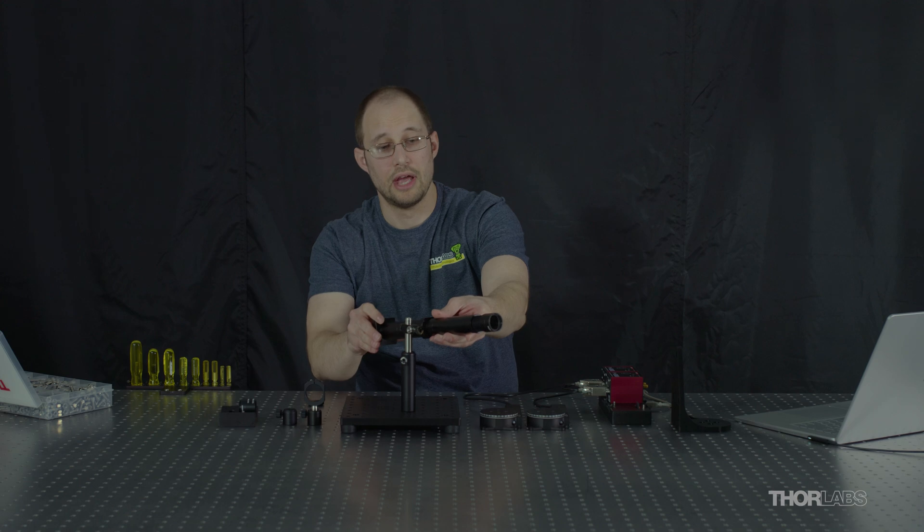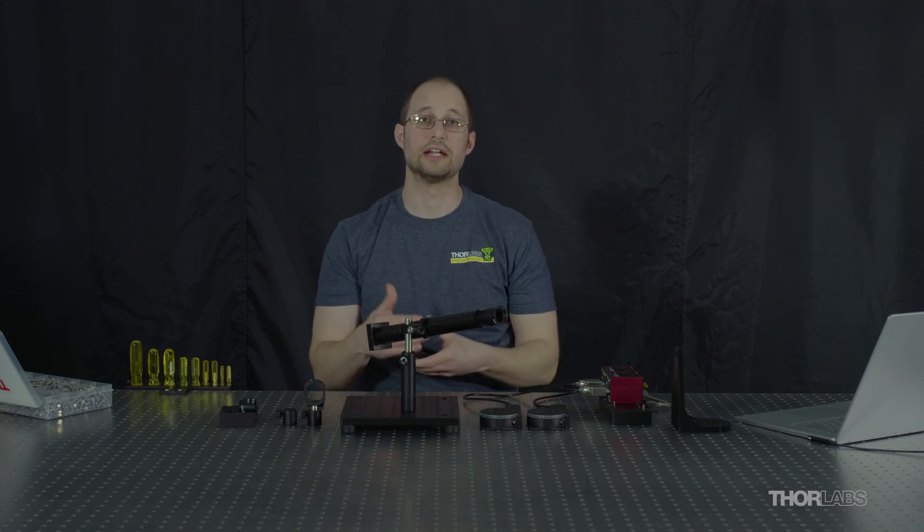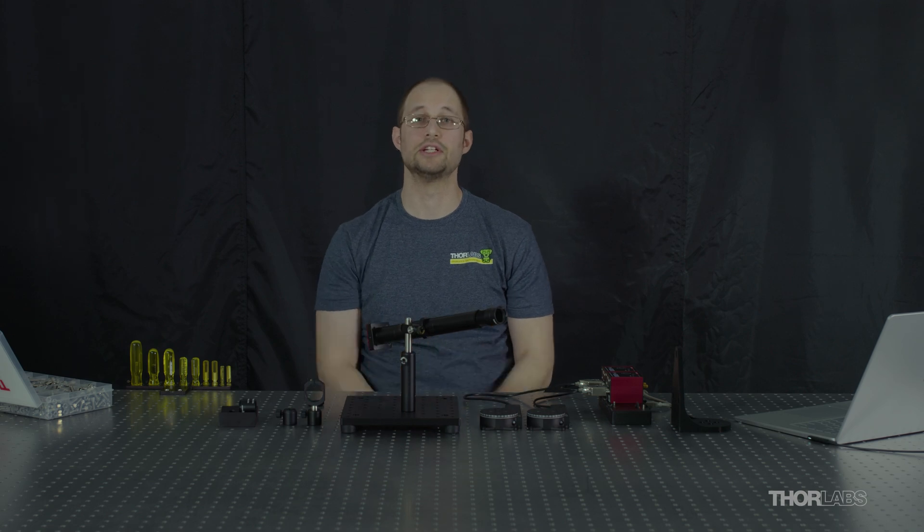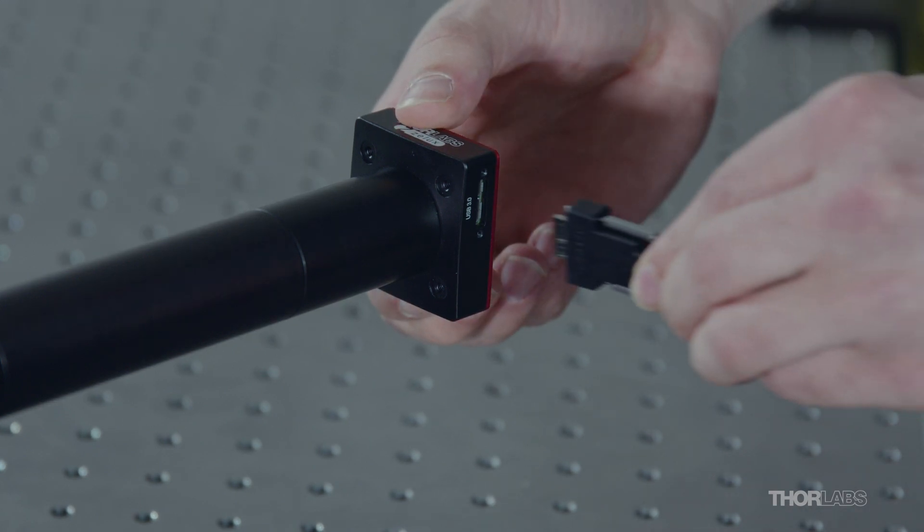To do a rough alignment, I'm going to aim the telescope at a distant object, ideally 10 plus meters away. And this will get it in a relatively close range for us to more easily adjust the focus to the sun later. Now I'll connect the camera to the computer.